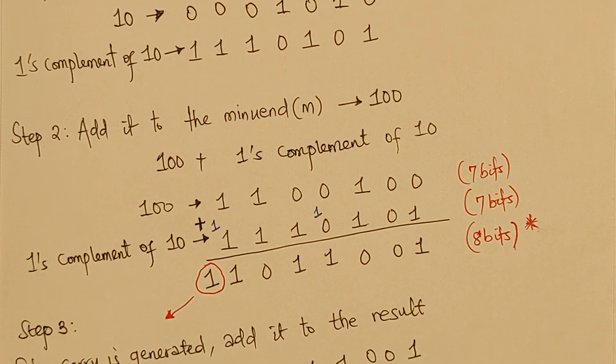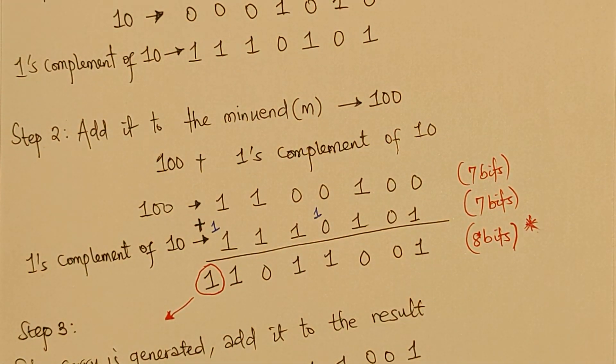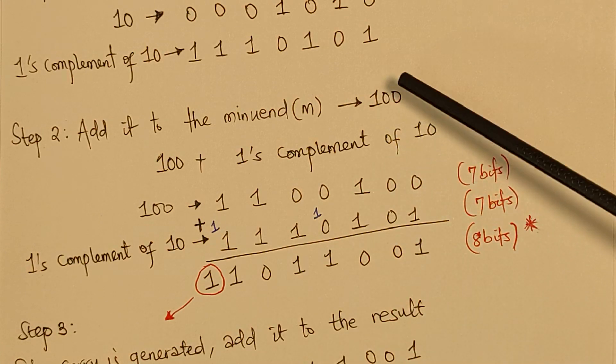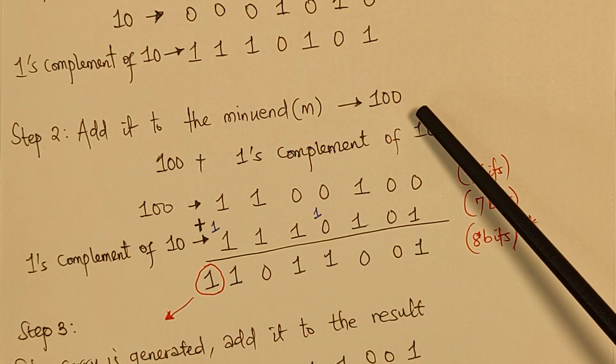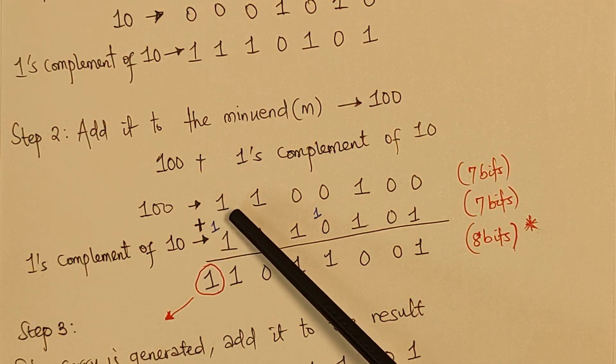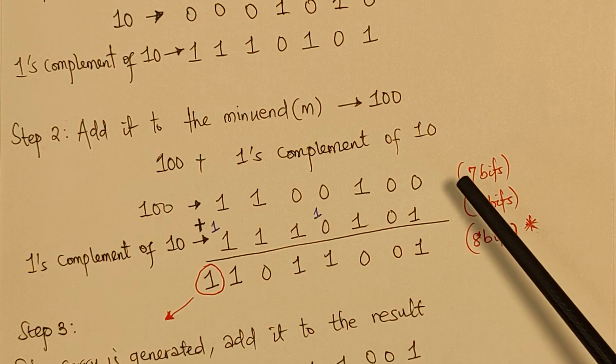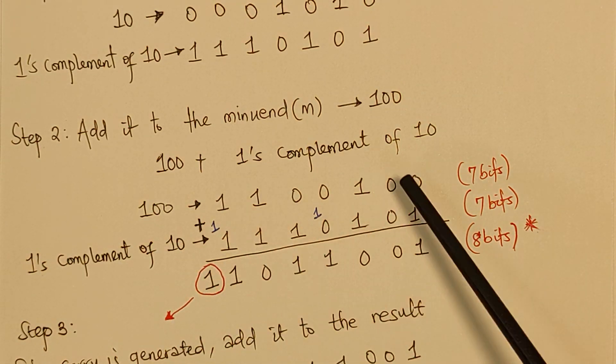And this 1's complement is actually the step 1. Now, we are going to take the step 2, which is to add the 1's complement to the minuend, which is 100. So, this is our complement of 10. So, we are going to convert this 100 to binary. And when we do that, we are going to have 1, 1, 0, 0, 1, 0, 0. Remember, in step 2, the rule says we are going to sum up the 1's complement of 10 and the minuend. So, to that, we are summing these values together.